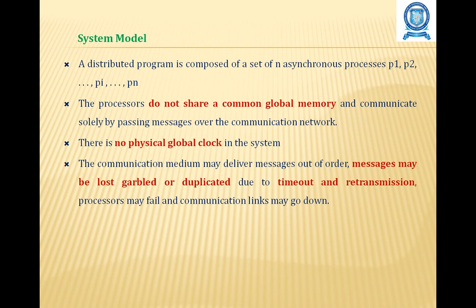A distributed program is composed of a set of N asynchronous processes, indicated as P1, P2, up to PN, that communicate by passing messages over a communication network. Each process runs on a different processor. The processors do not share common global memory and communicate solely by message passing. There is no physical global clock to which processors have instantaneous access. The communication medium may deliver messages out of order, and messages may be lost or duplicated due to timeout and retransmission. Processors may fail and communication links may go down.